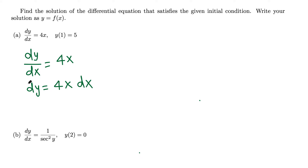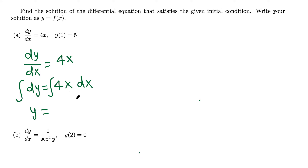Now we integrate both sides. The anti-derivative of 1 is just y. The anti-derivative of 4x is 4 times x squared over 2, and the 2 cancels to give 2x squared plus c.